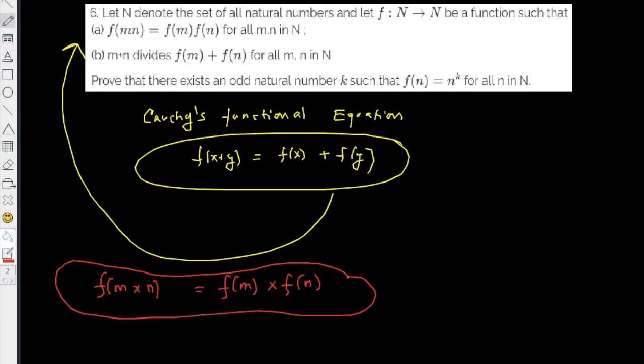One can show using mathematics that the function is necessarily a polynomial with leading coefficient one and all other coefficients zero. So it's basically n to the power k.